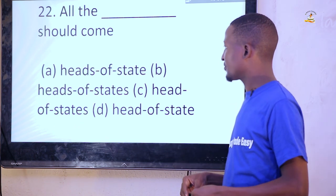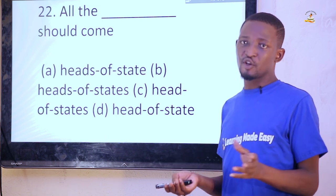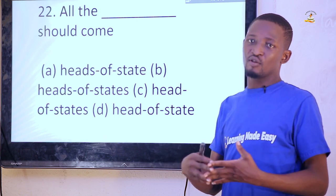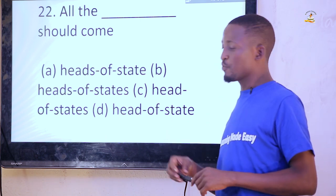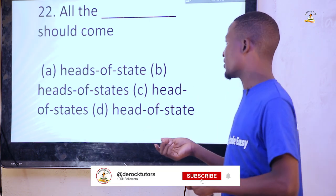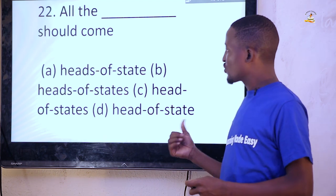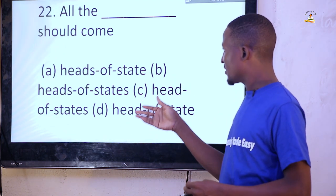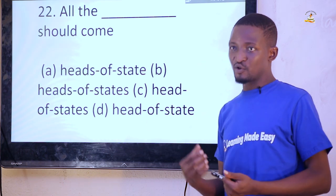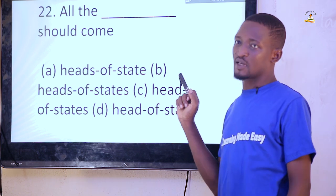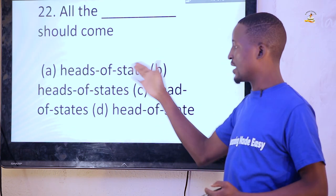This is a question on compound nouns — pluralization of compound nouns. When you have nouns that are more than one or two words, you call them compound nouns. The problem comes to which one should be pluralized. When you want to pluralize them, you pluralize the root word, which is the base word, rather than the affixes. So among the three words — 'heads of states' — the root word 'head' should be the one pluralized, not 'state'. The answer is 'all the heads of states,' option A.